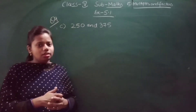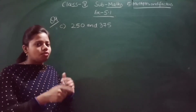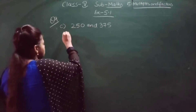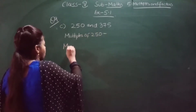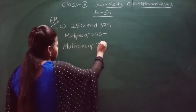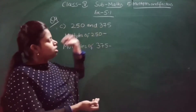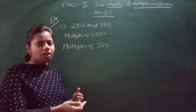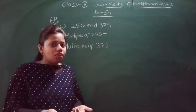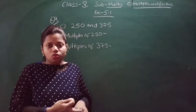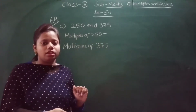Now how to do: in this question, we have to write the multiples of both numbers — the first 5 multiples — and then we have to find the common multiples also. So let us start. First we have to write the multiples of 250, then we will write the multiples of 375. Multiples means we have to write the table only. But since these are 250 and 375, we don't know these tables by heart. So what we can do is multiply by 2, 3, and so on to get the multiples.